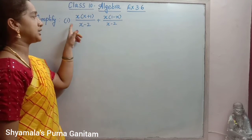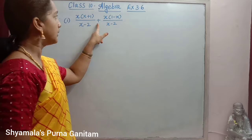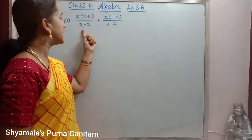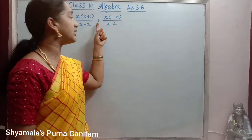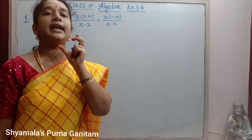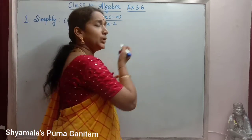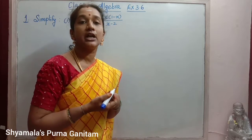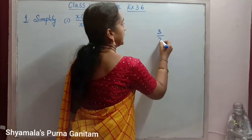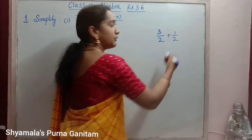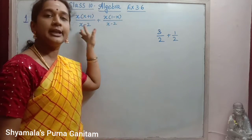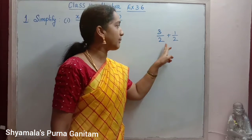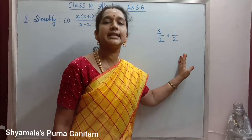Simplify x(x+1)/(x-2) plus x(1-x)/(x-2). Here, between these two terms we have an addition symbol. If we take two fractions with like or unlike terms, how will we simplify or add them? For example, 3/2 plus 1/2 — here in the denominator we are having like terms, so we call these like fractions.